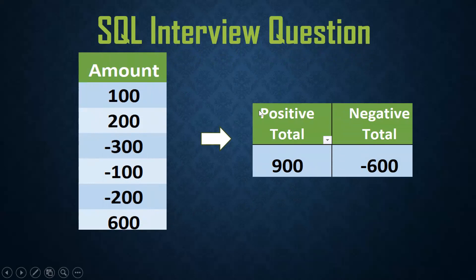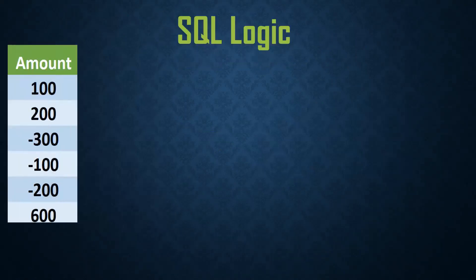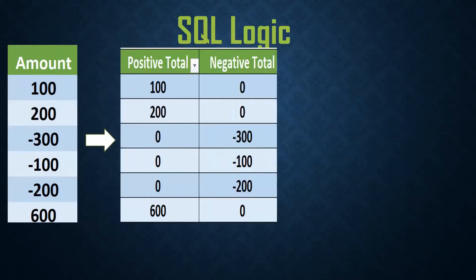They give positive and negative values and want you to get the positive total and negative total. Let's see the logic. This is my input column. What we should do first is take positive values separately and negative values separately. Wherever there's a negative value, we put zero; wherever there's a positive value in the negative column, we also put zero. For this kind of conditional handling, we use the CASE statement.